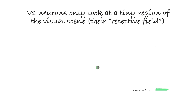In V1, neurons only look at a tiny region of the visual scene, which is called the neuron's receptive field. Information through this small window is ambiguous, so a V1 neuron cannot figure out which object it is seeing. To understand what it is seeing, the neuron needs to integrate spatial information from outside its receptive field.